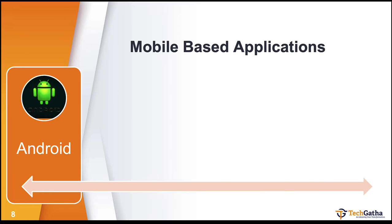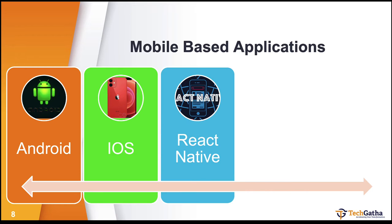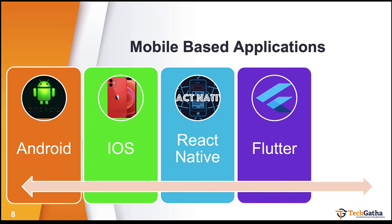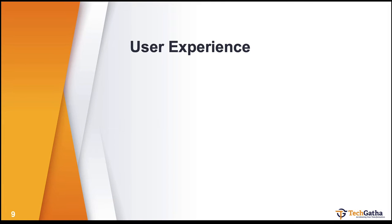For mobile-based applications, you may target Android users — using Java, Kotlin, or Groovy — or iOS users using Objective-C or Swift. React Native provides flexibility to create apps for both Android and iOS. Flutter offers cross-platform support for mobile and web applications, creating hybrid apps, and similarly so does the Ionic framework.